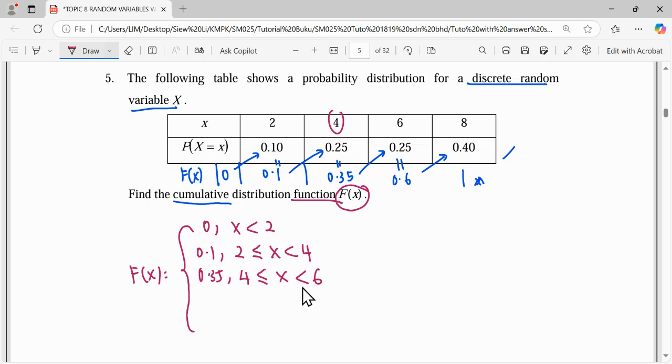So less than 6. And now we have here 0.6 for random variable equal to 6 and before 8. And then lastly 8 is total probability 1, which is x greater than or equal to 8.